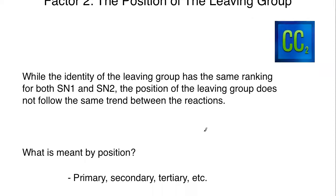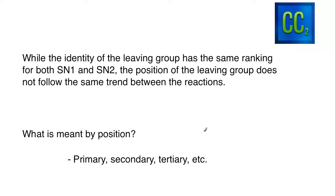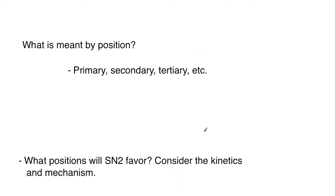We said that a good leaving group is a weak base and we drew some correlations to Ka and pKa. Now we want to talk about where the leaving group is actually going to be positioned on the alkyl chain that is undergoing a substitution or elimination reaction. I have an important note at the beginning: while the identity of the leaving group has the same ranking for both SN1 and SN2, the position of the leaving group does not follow the same trend between the reactions.